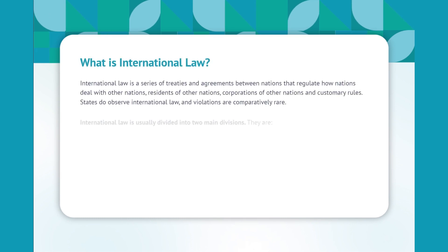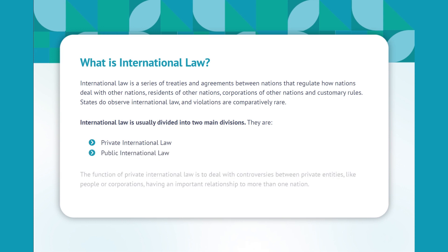What is international law? International law is a series of treaties and agreements between nations that regulate how nations deal with other nations, residents of other nations, corporations of other nations, and customary rules. States do observe international law, and violations are comparatively rare. International law is usually divided into two main divisions.